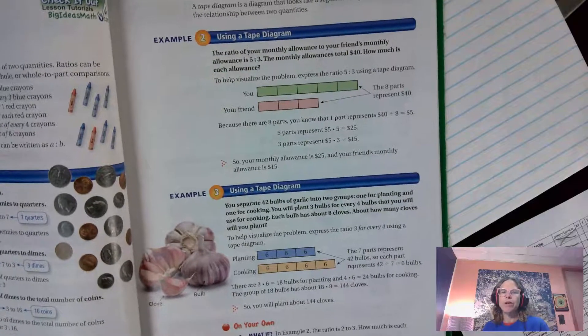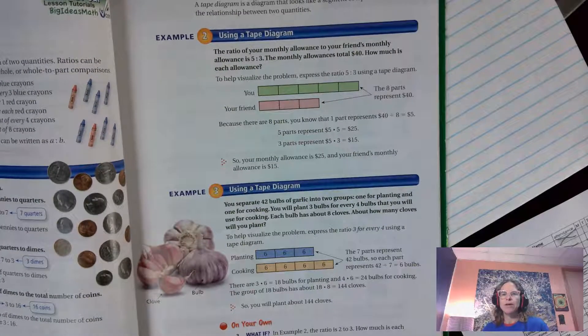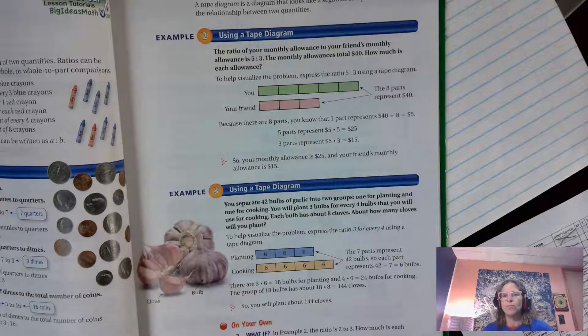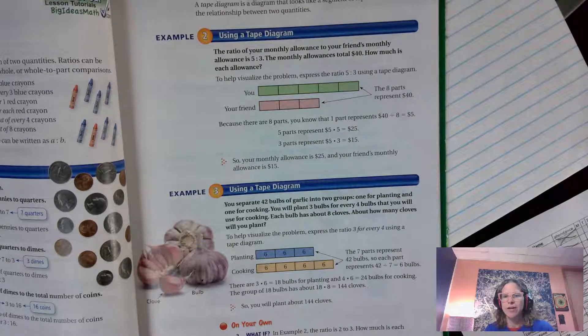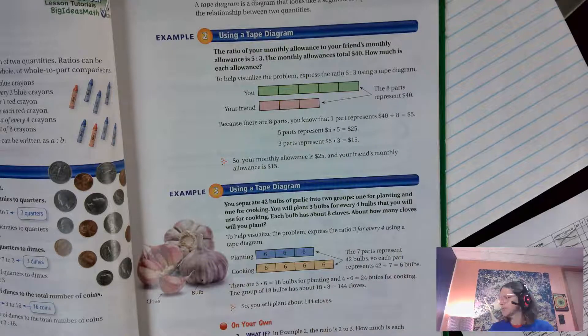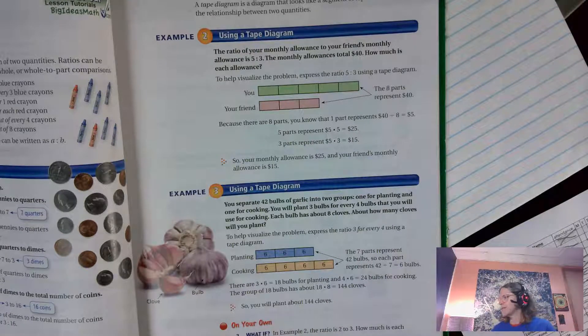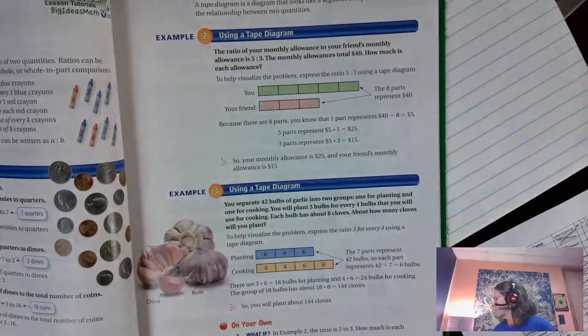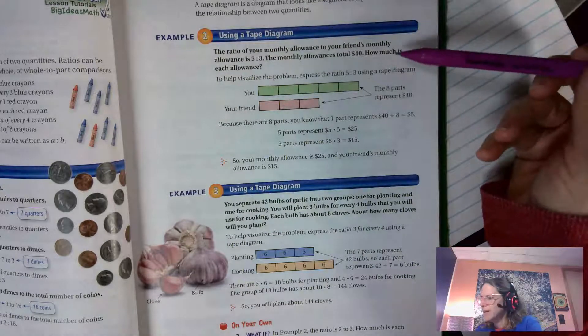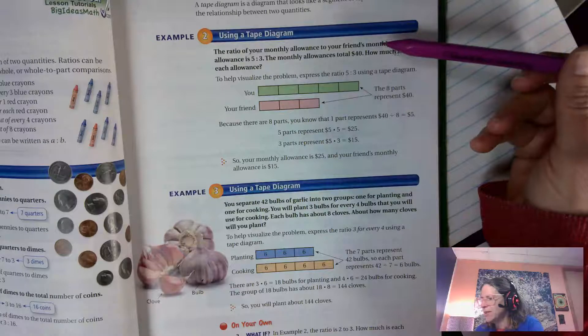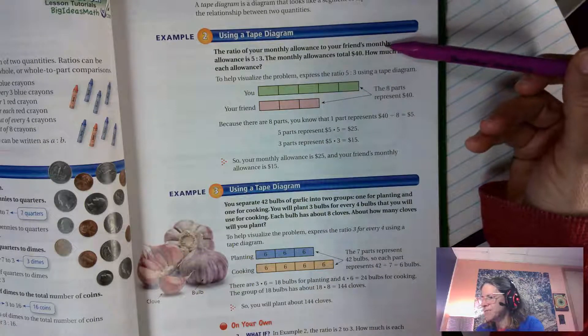Okay, so tape diagrams are helpful if you want to draw pictures out. I like drawing pictures. I think they're very helpful making models, just like we do in science. It's also helpful to make models in math. So this example right here says that the ratio of your monthly allowance to your friend's monthly allowance is five to three.